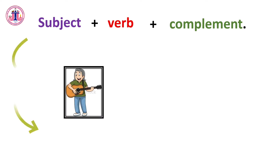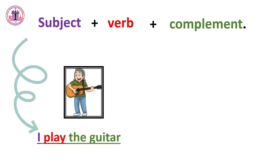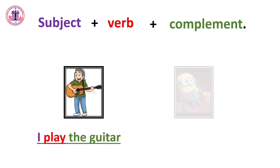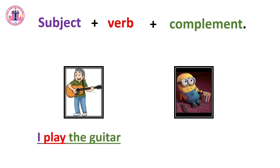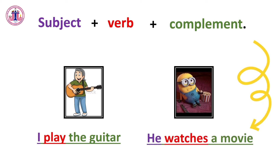For example, this is me and I have a guitar. I play the guitar. 'I' in purple is the subject, 'play' is the verb, and 'the guitar' in green is the complement. Another example: a boy — he watches a movie. 'He' is the subject, 'watches' is the verb, and 'a movie' is the complement.